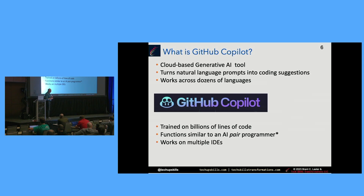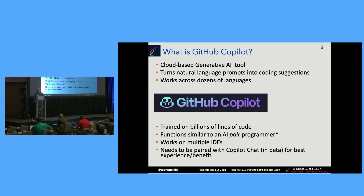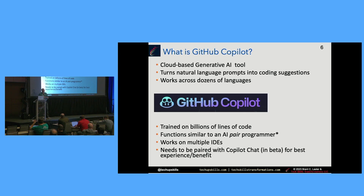It works on multiple IDEs. For best benefit, in my opinion, it really needs to be paired with Copilot Chat. The basic Copilot that's available to try out or pay for is just the Copilot interface in the IDE — it doesn't have chat included. Chat is in beta, being the interface where you can type things like in ChatGPT and get answers. We're expecting to hear more about how that's going to be priced or packaged, probably at GitHub Universe, November 8th and 9th.